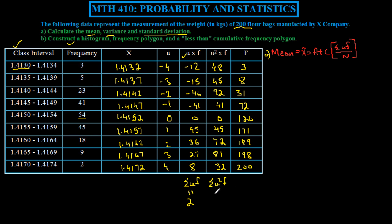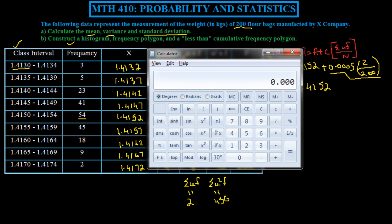The mean of u is simply 2 over 200, but we don't want the mean of u, we want the mean of x. x-bar equals a, which is 1.4152, plus 0.0005 times net uf, 2 over 200. This simplifies to 1.4152 plus a very small number. If we calculate 0.0005 times 1 over 100, we get 1.415205. That's our exact mean.